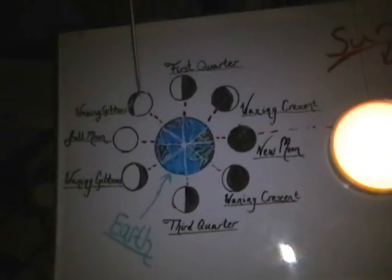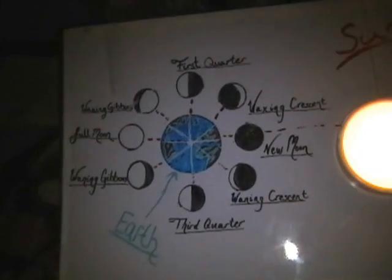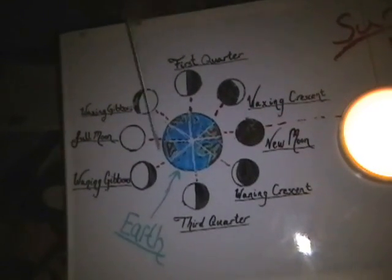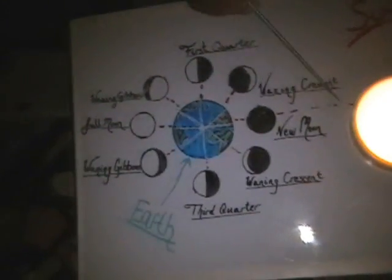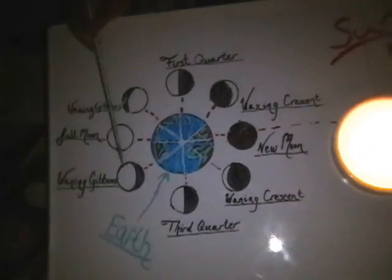This is a waxing gibbous. This occurs when the sun, the earth, and the moon create an obtuse angle.